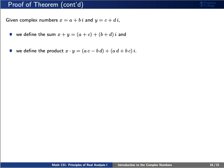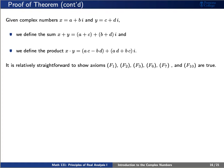Given two complex numbers x, which is a plus bi, and y, which is c plus di, we'll define the sum of these two complex numbers as the complex number a plus c plus b plus d times i. And we'll define the product x times y as ac minus bd plus ad plus bc times i. It's relatively straightforward to show that six of these ten axioms hold true, so we need to discuss what happens with the remaining four.